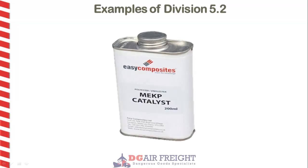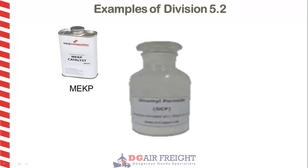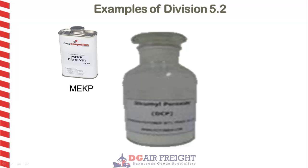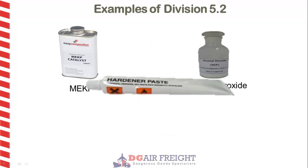Examples of Division 5.2 include methyl ethyl ketone peroxide, or MEKP, which is a catalyst used in fiberglassing. Dicumyl peroxide, which is used as a cross-linking agent in the rubber and plastics industry. Dibenzoyl peroxide, which is primarily used in the manufacture of polymers like expandable polystyrene, but can also be used in acne treatment.